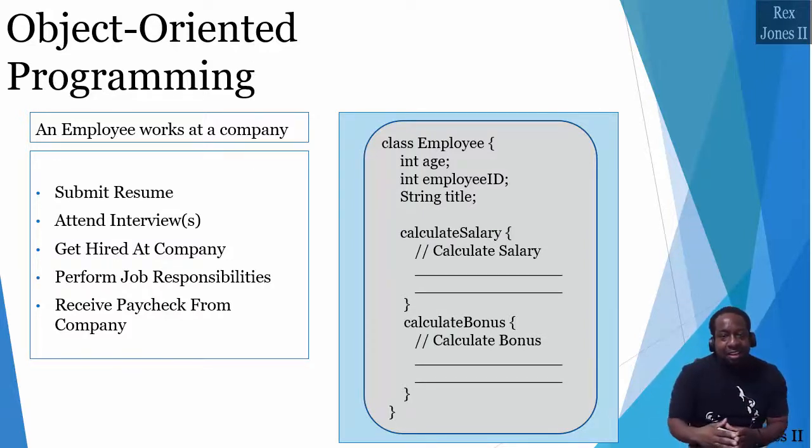We define the data and we define the methods that are allowed to act on the data. The data is age, employee ID, and title. While the methods are calculate salary and calculate bonus.